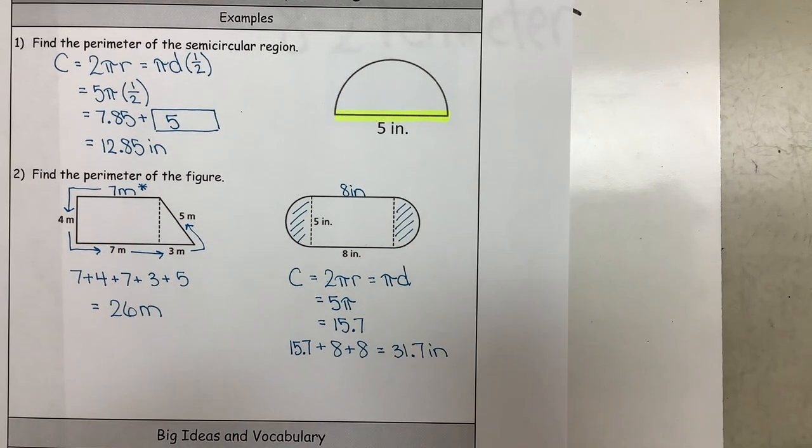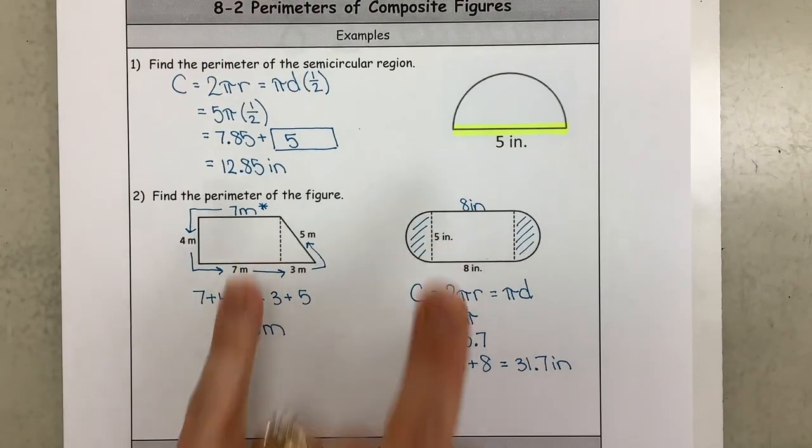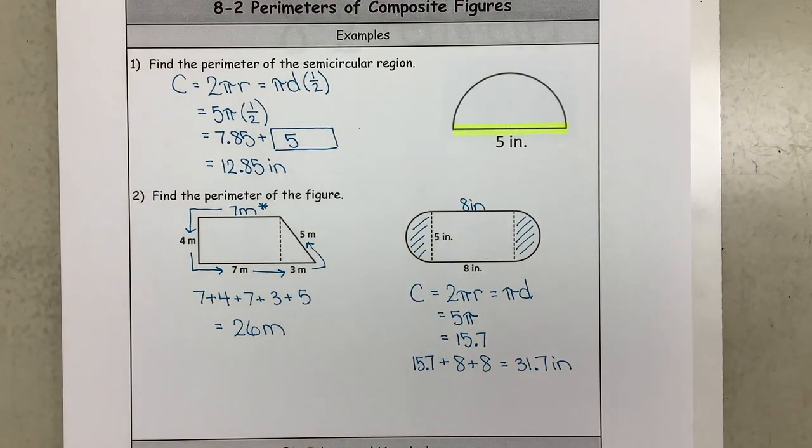Alright, and these are known as composite shapes because they're more than one shape put together.